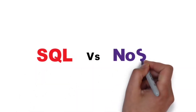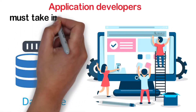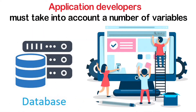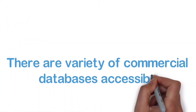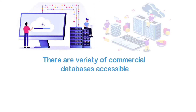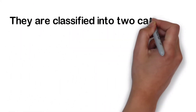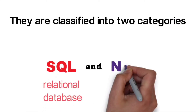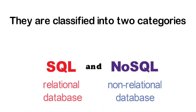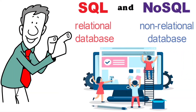SQL vs NoSQL. When deciding on a database to purchase, application developers must take into account a number of variables. There are a variety of commercial databases accessible, each with a unique value proposition for the consumer. They're classified into two categories: SQL, Relational Database, and NoSQL, Non-Relational Database. We will look at the components of each and see how they might help developers.